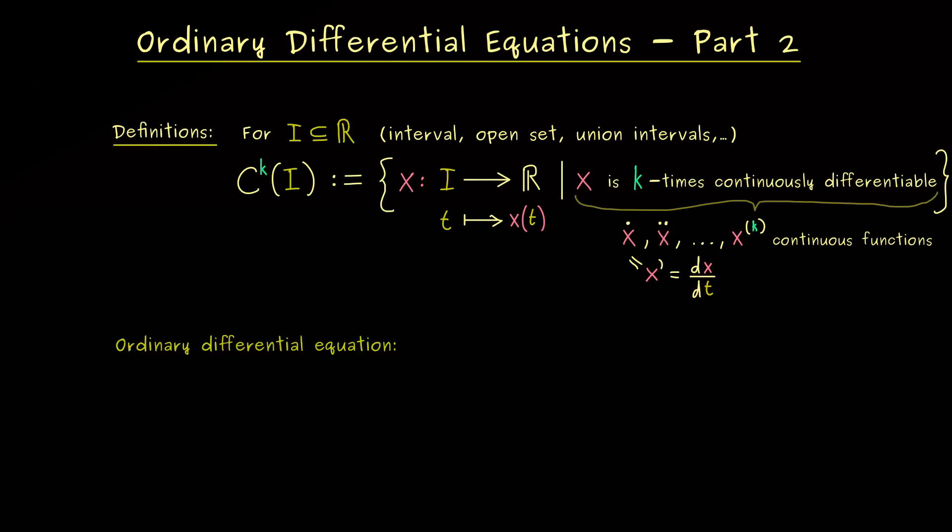Namely it should be given by a combination of the derivatives of the function x. Indeed we could write it down by a functional relation. For that we take a continuous function capital F, and then we have different inputs, first of all the independent variable t, and then the function x and the derivatives of x up to some order. So as before we could say the highest derivative is the kth order. And now this function with all the inputs should be equal to 0.